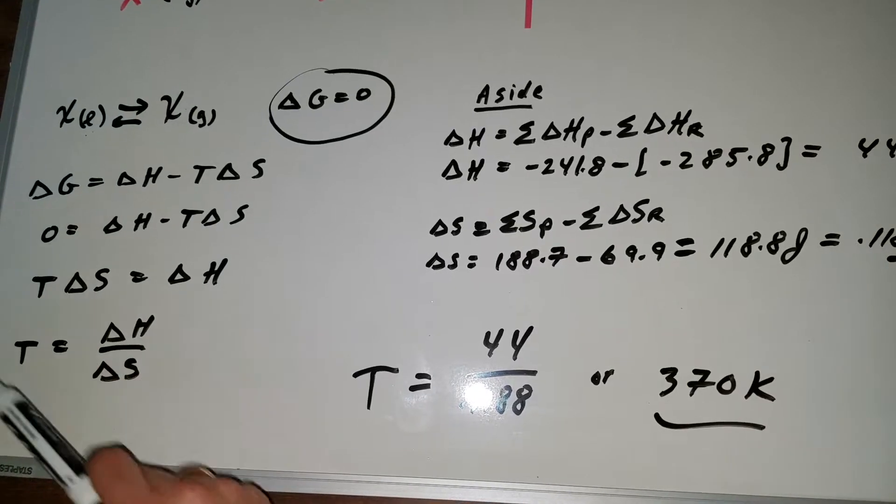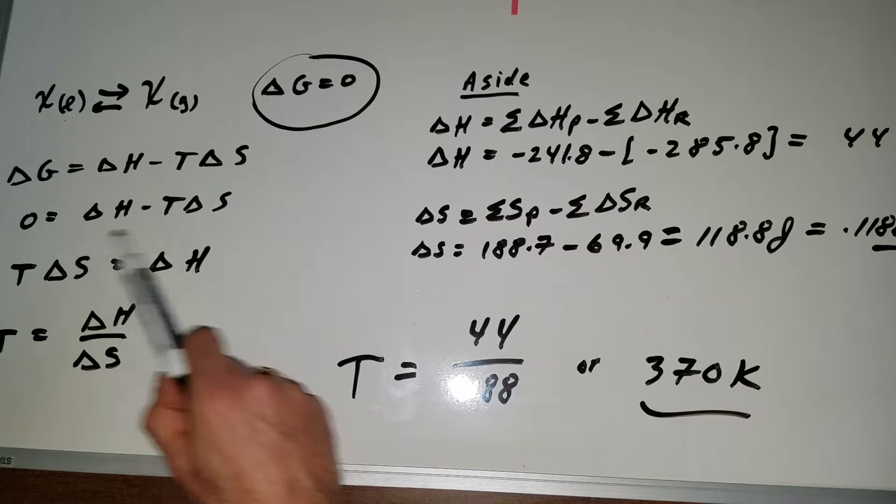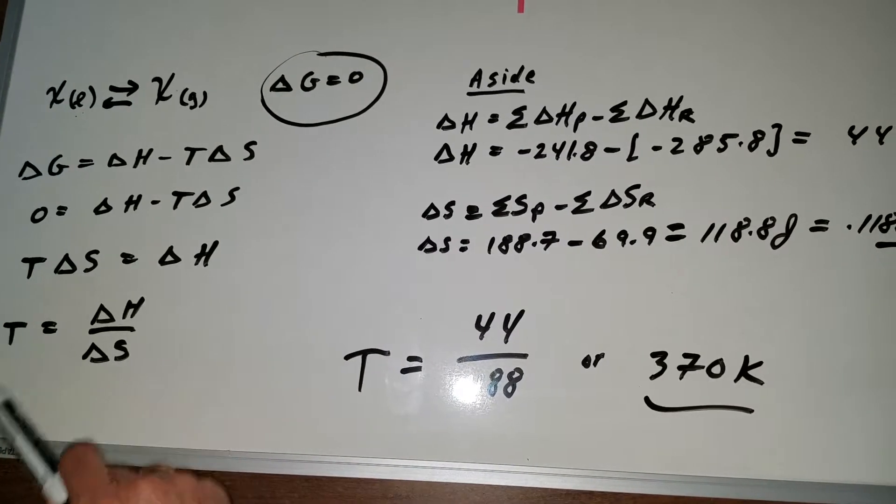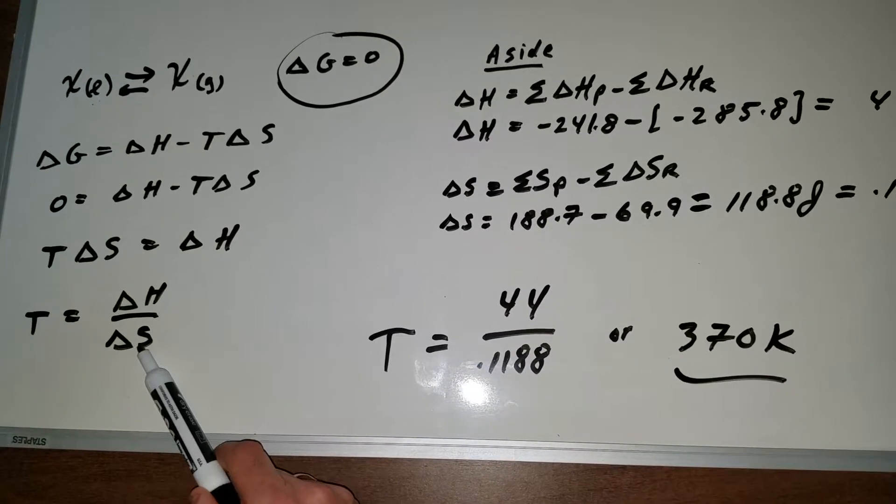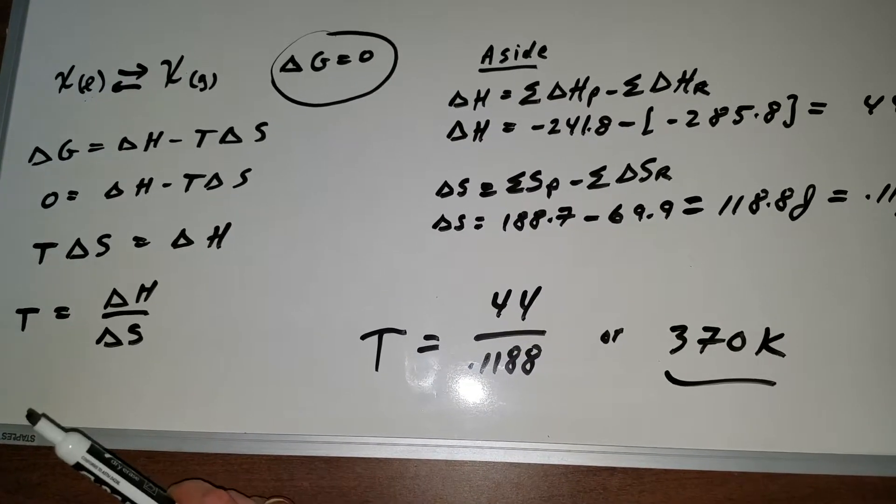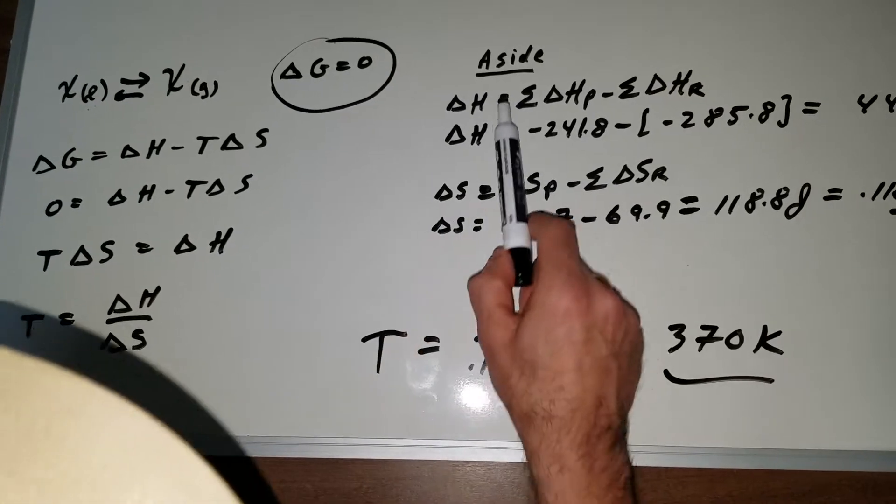Now I plugged in my zero for delta G, there's my H, T delta S brought it to the other side and therefore the temperature in Kelvin because we're working in Kelvin is going to be delta H over the delta S. Now unfortunately I didn't just give you the delta H and the S, I'm going to make you work for it.